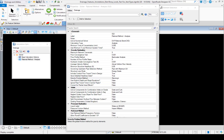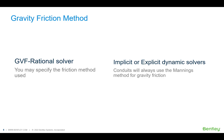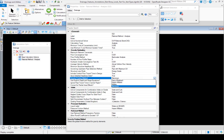Next, I'll look at the gravity friction method, which I'll be setting to Manning's. Just a few notes on this: if you're using the GVF rational solver, then you do have the option to specify which friction method you'd like to be used. However, if you're using the implicit or explicit dynamic solvers, then conduits will always use the Manning's method for gravity friction.